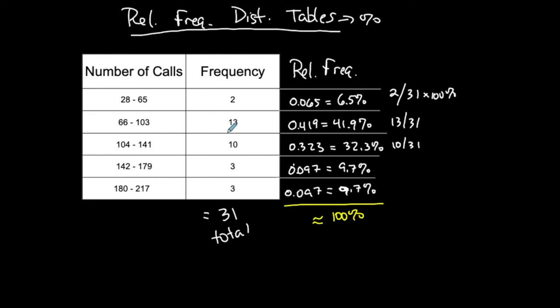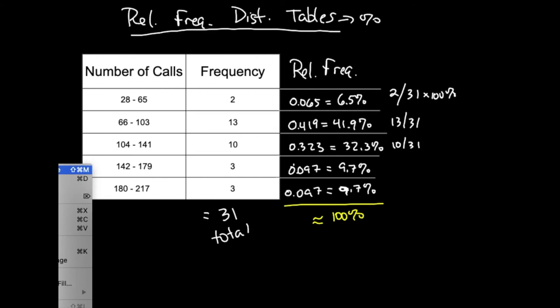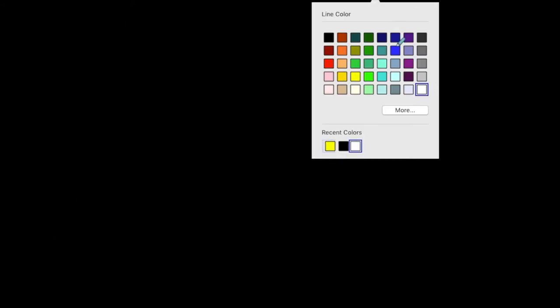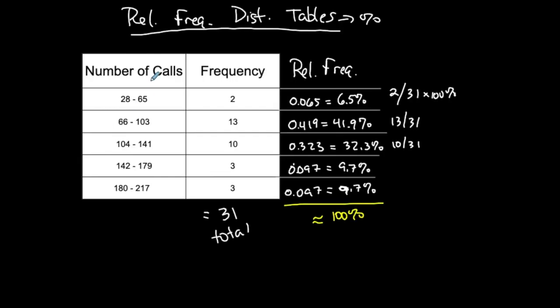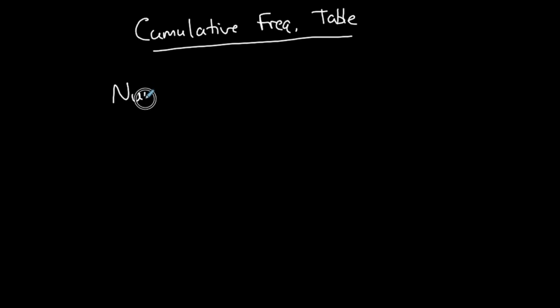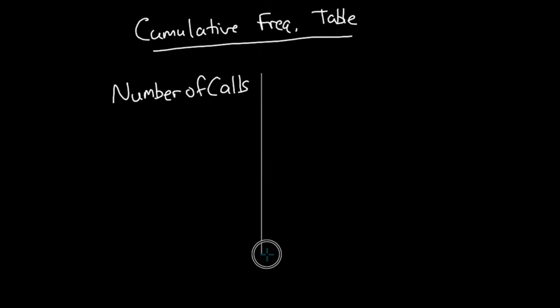This is a relative frequency distribution table — instead of frequencies, we have relative frequencies. Now I'm going to introduce another type: the cumulative frequency table. This also comes from a frequency table, but unlike the relative frequency table, the classes will change for a cumulative frequency table.